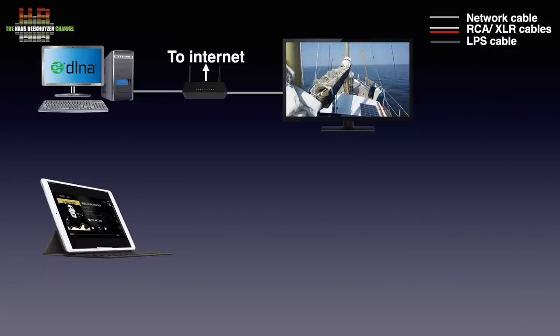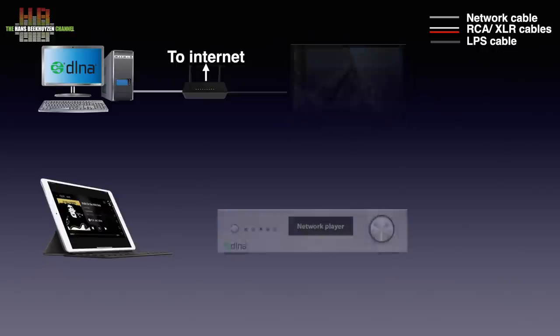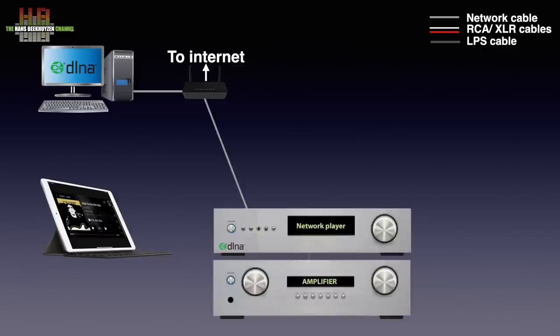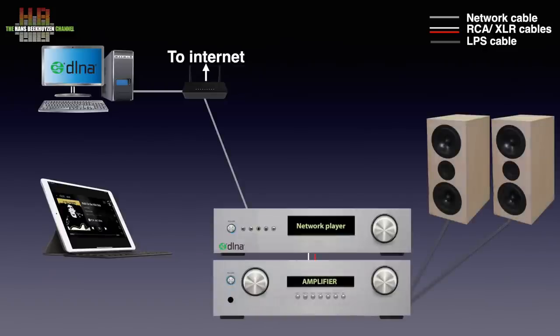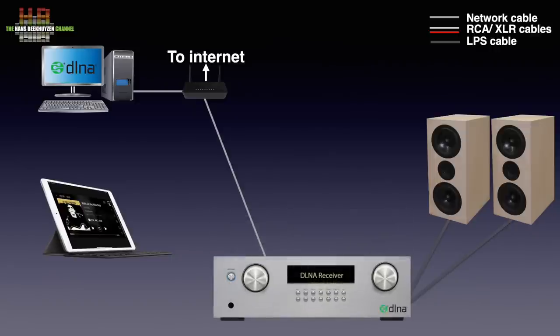To play music, the TV sound is not the best solution. And even if you have an AV receiver connected to your TV, you don't want the TV to be on all the time — it not only consumes energy, it also wears out the TV unnecessarily. For music you use a DLNA network player connected to an amplifier and speakers. A tablet or smartphone can be used to select the music, but some DLNA network players have that functionality integrated.